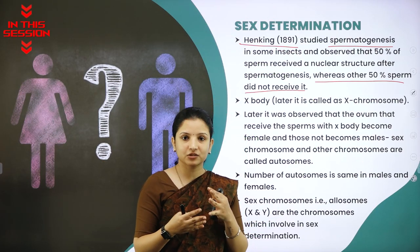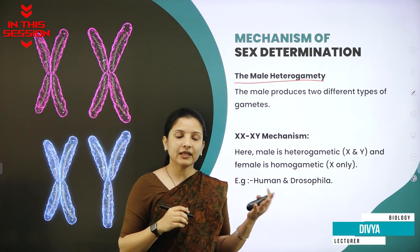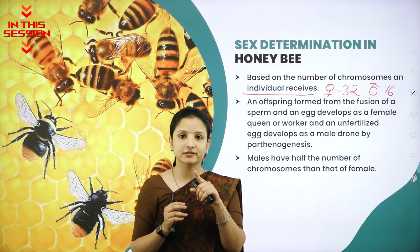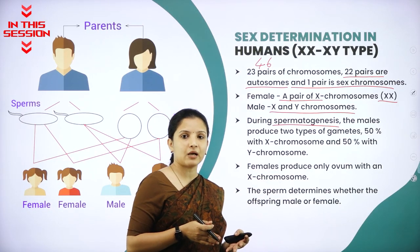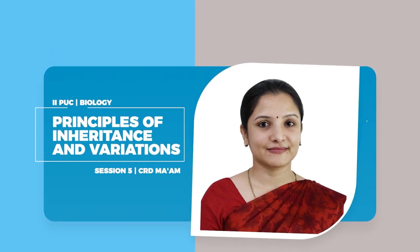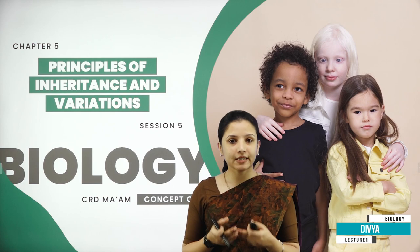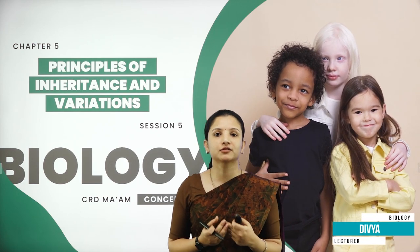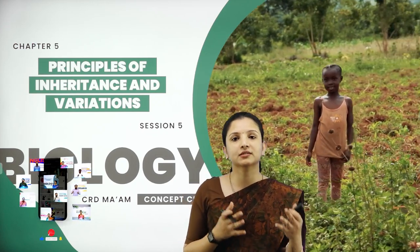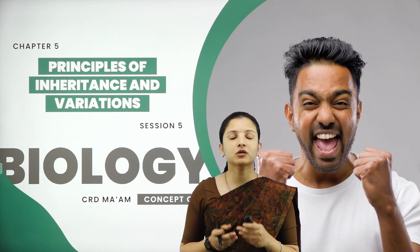In spermatogenesis, cell division takes place and chromosomes move into the cells. In the previous session we studied about linkage and recombination, and how T.H. Morgan conducted experiments on Drosophila melanogaster, finding how linkage and recombination work on chromosomes and how they are carried to F1 and F2 generations. In today's session we shall study about polygenic inheritance.